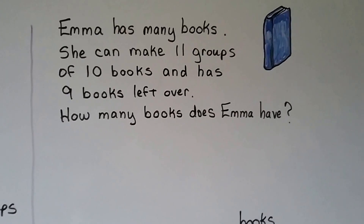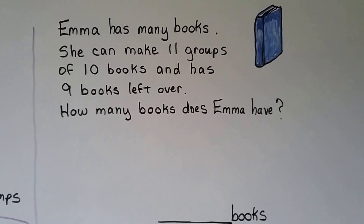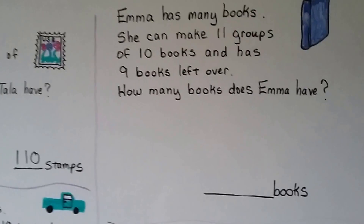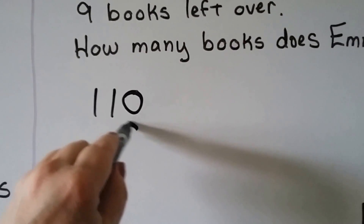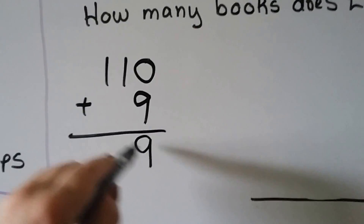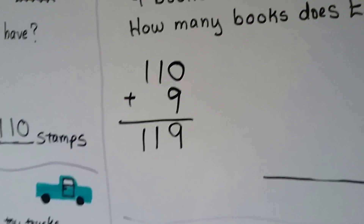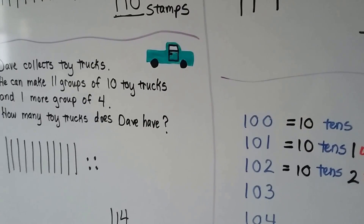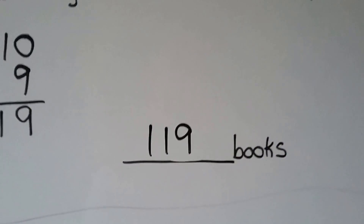Emma has many books. She can make 11 groups of 10 books and has 9 books left over. How many books does Emma have? Well, we now know that 11 groups of 10 is 110. It also says she has 9 books left over. We can add these together. 9 plus 0 is still a 9, and we would just drop the 11 down — 119. We could also make rods of 10 and have 9 ones and count them. She has 119 books. That's a lot of books — she likes to read.